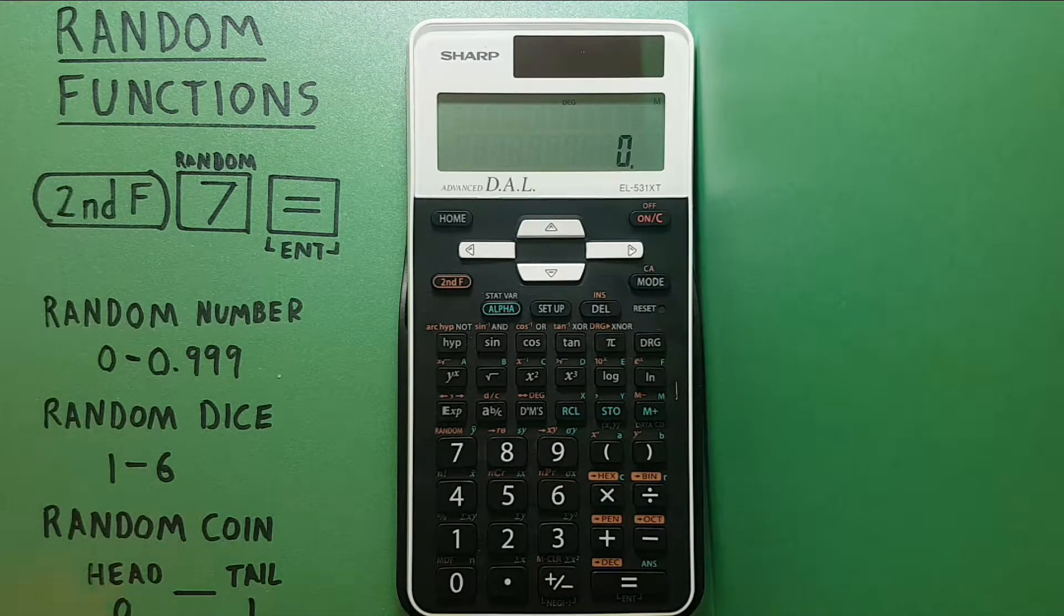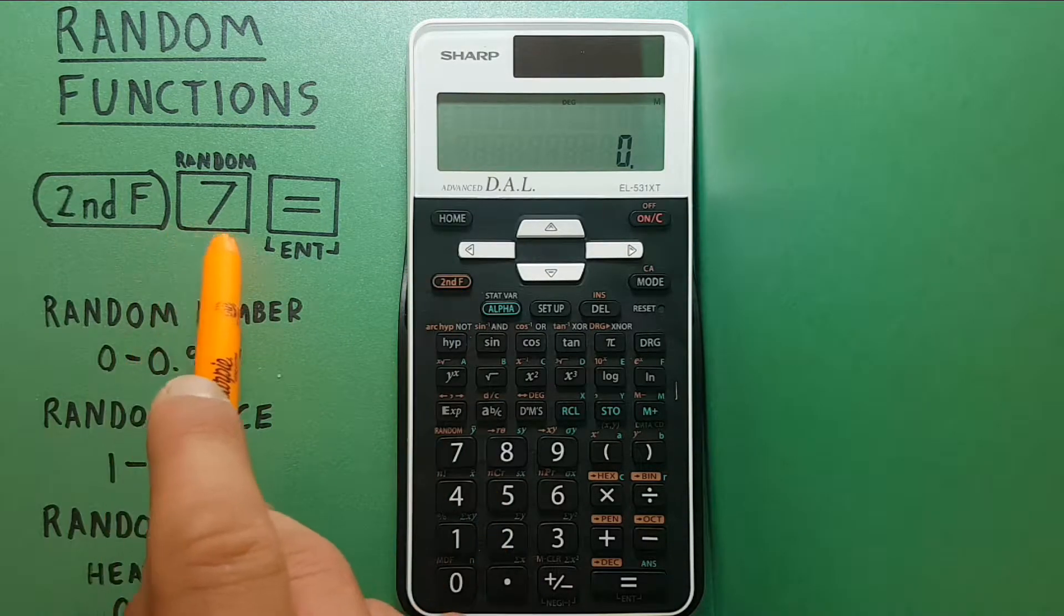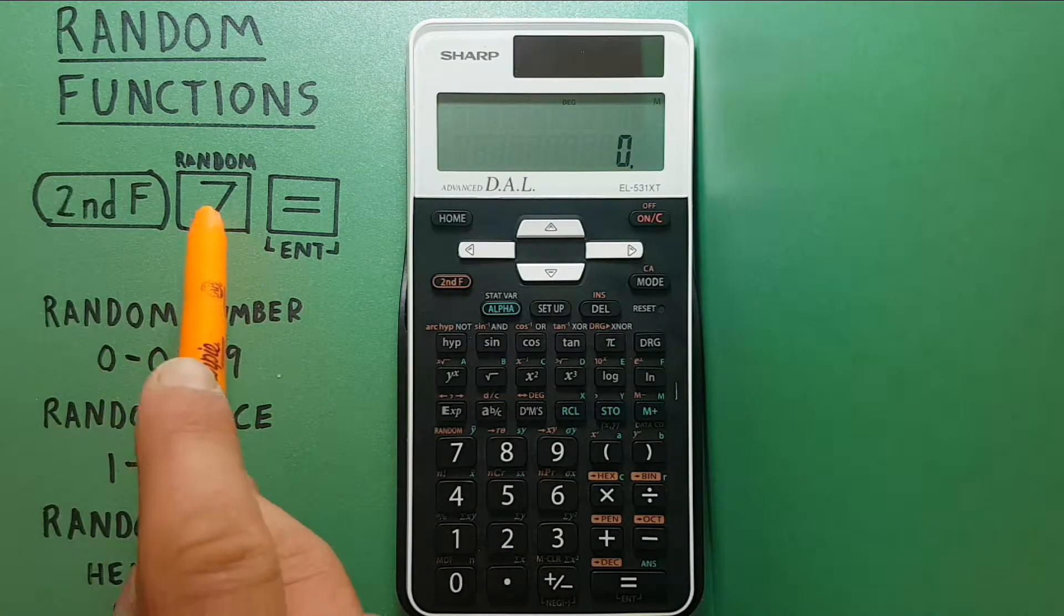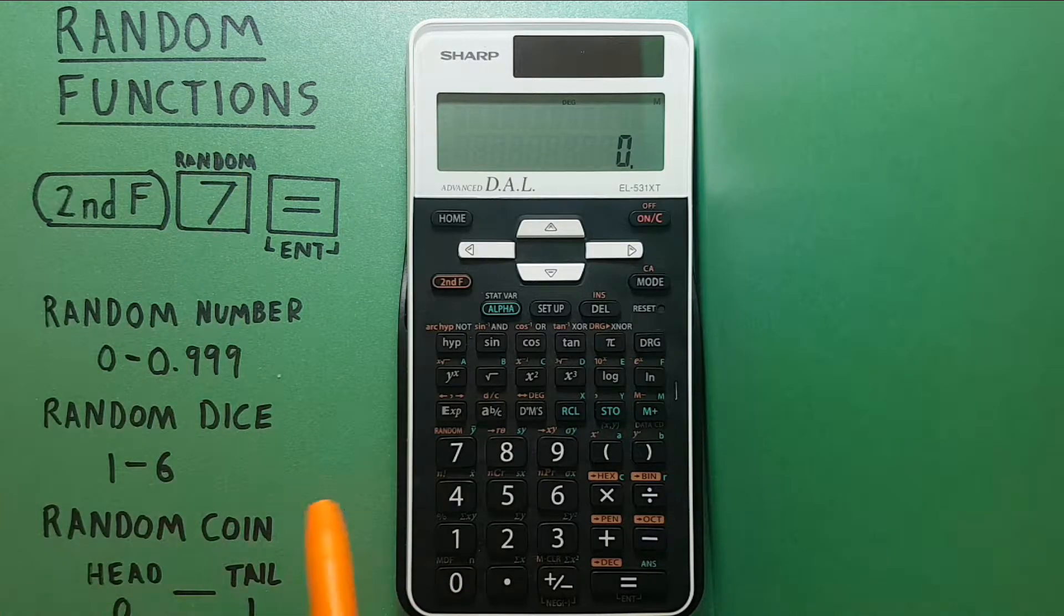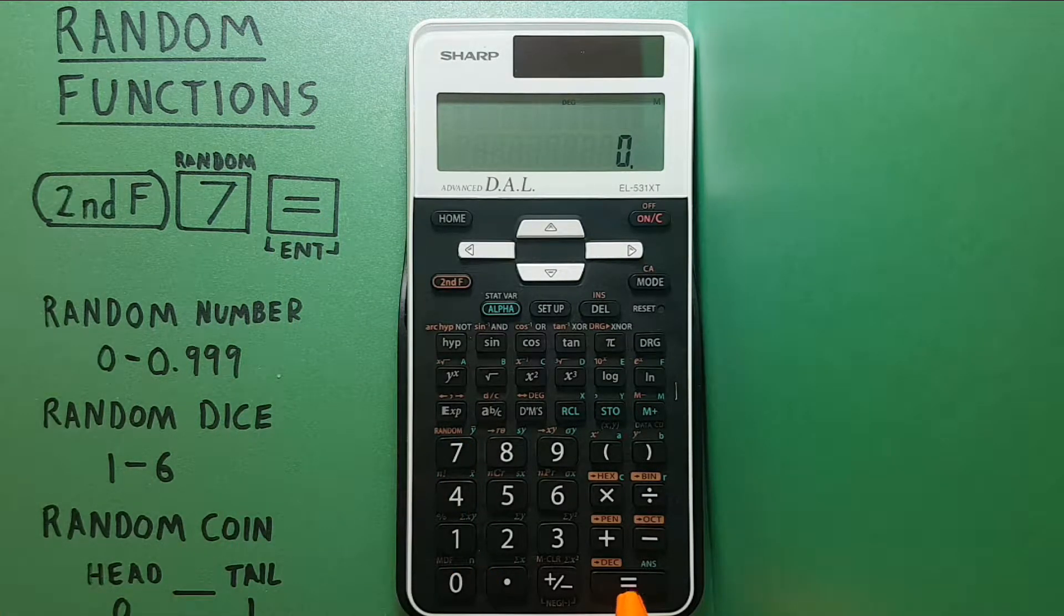To do this we will be using the second function key located here, the seven with the random secondary function located here, and the equals key located here.